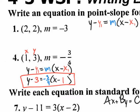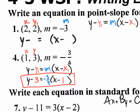Let's look at number one. Rewrite the equation y minus blank equals blank parenthesis x minus blank. The x1 and y1 values come from the coordinate (2, 2), and the m value is negative 3. So negative 3 goes in front of the parentheses, and you put 2 for x and 2 for y. We are done.